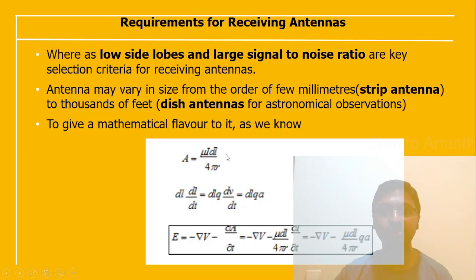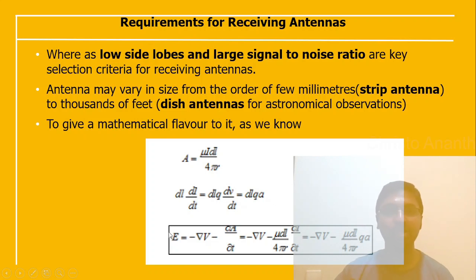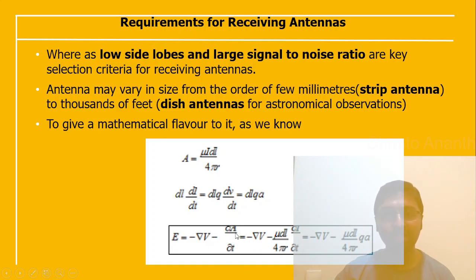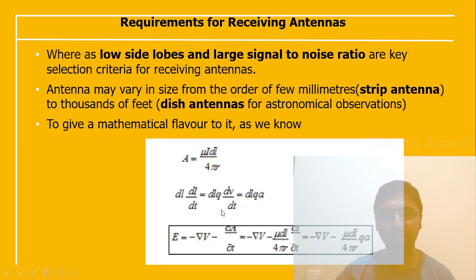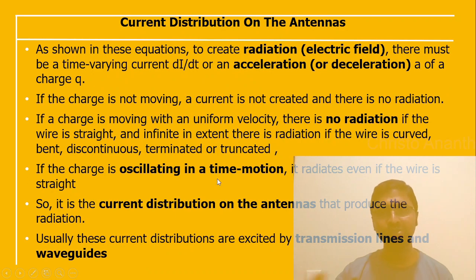Mathematically, the vector potential A equals μ·I·dl / (4π·r). The relation d(I·dl)/dt = dl · dq/dt, where dq/dt represents acceleration. The electric field E is the negative of the potential gradient: E = −∇V − ∂A/∂t, where ∂A/∂t = μ·dl / (4π·r) · dI/dt. Substituting this factor, we get the expression for the electric field. To create radiation and an electric field, there must be a time-varying current dI/dt, or an acceleration or deceleration of a charge q.